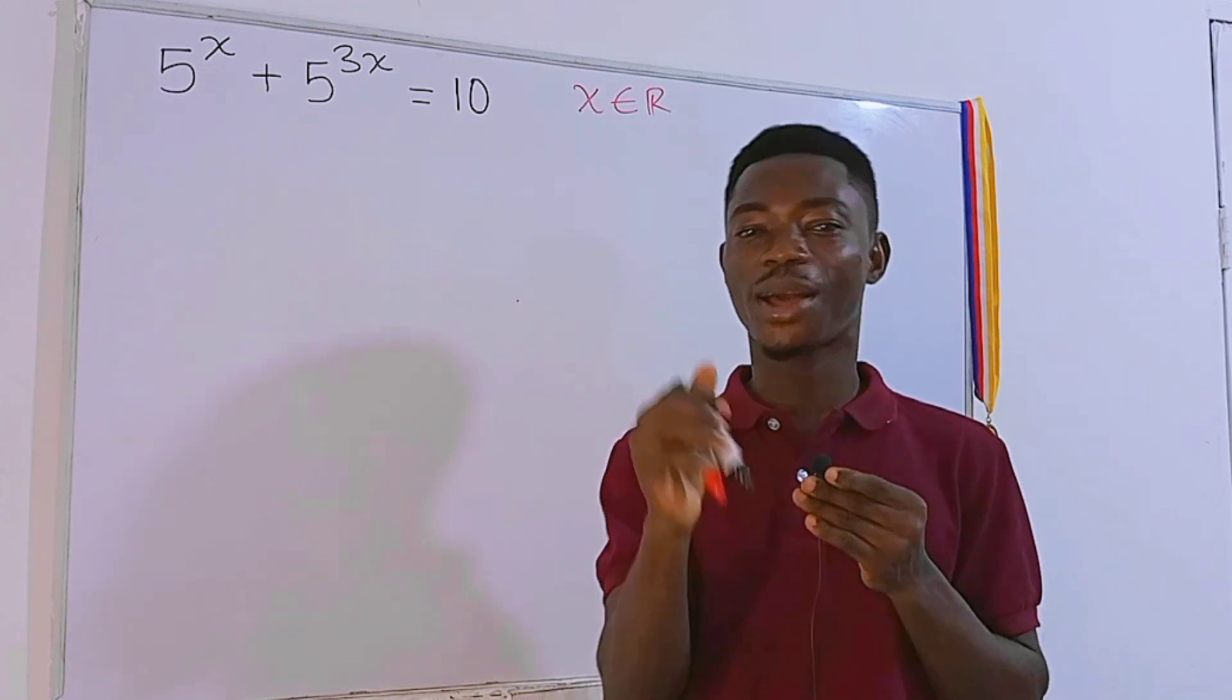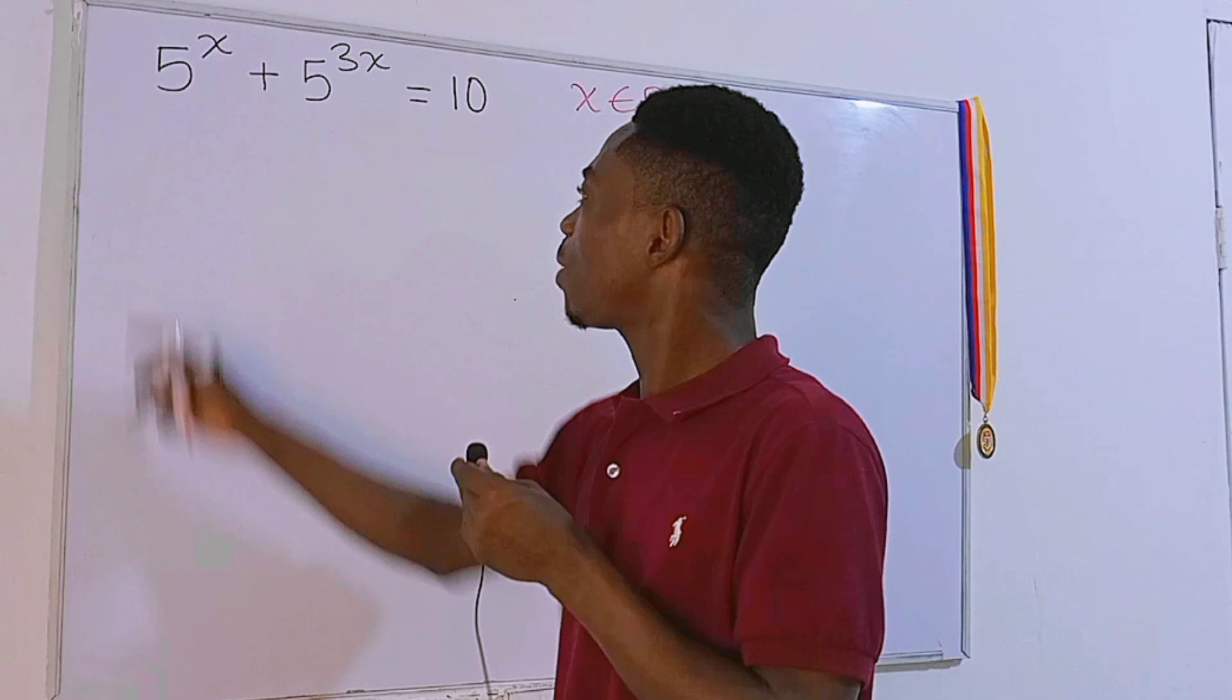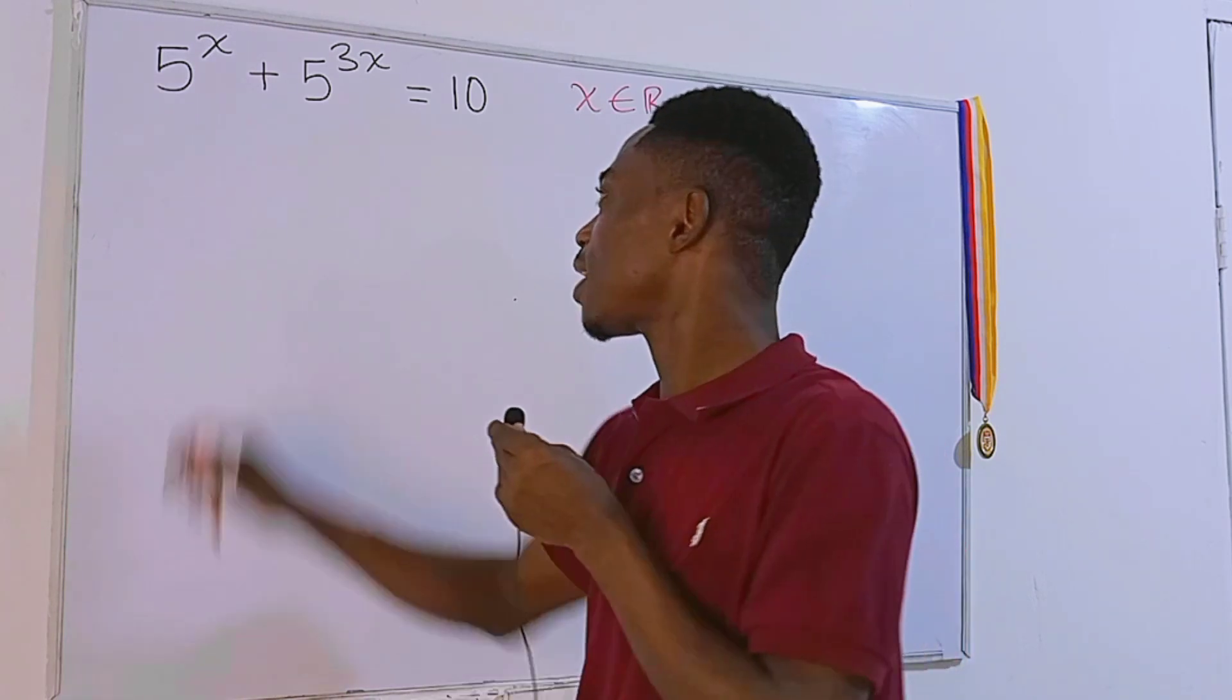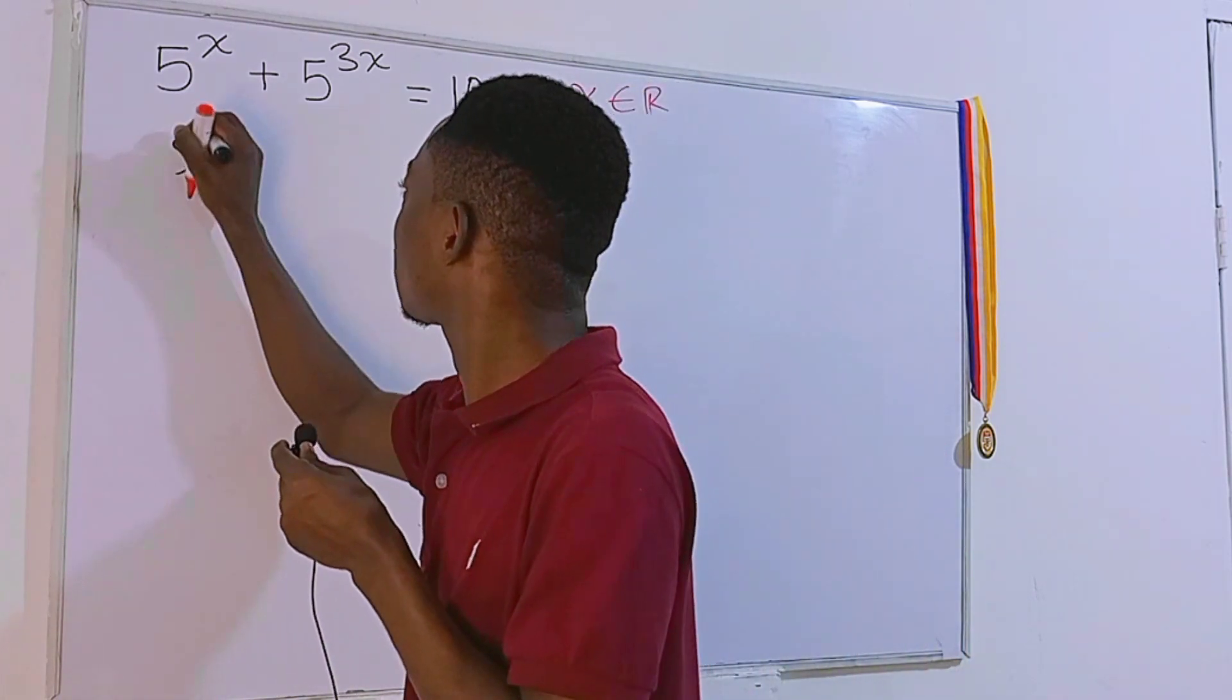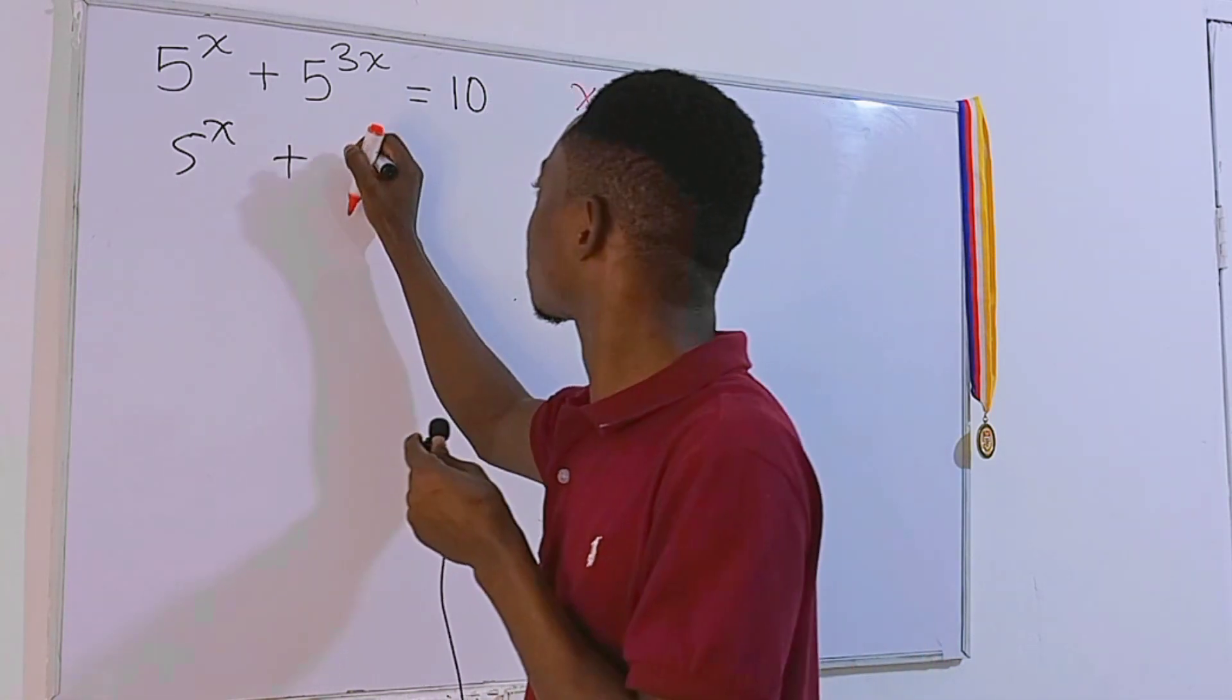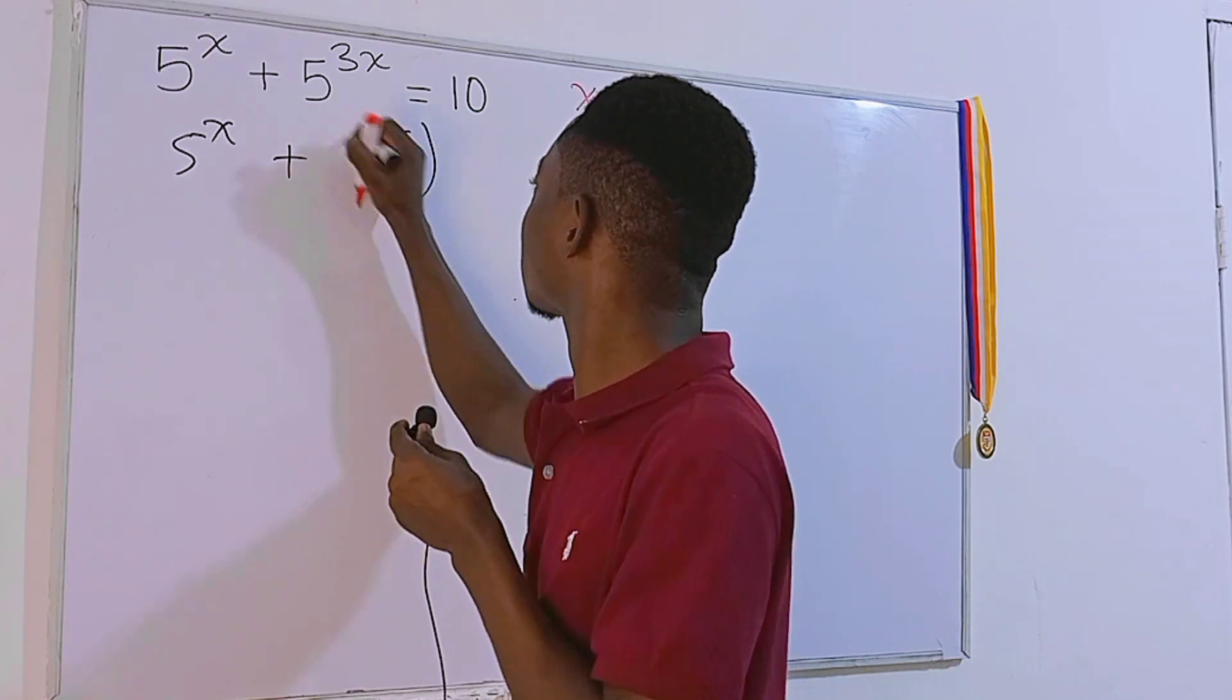Now let's begin. Looking at this equation critically, you can see that substitution method would be the best option. So I'll just keep the first term, that is 5 to the power x, then plus this right here is supposed to be the same as 5 to the power x, all to the power 3, and this equals 10.